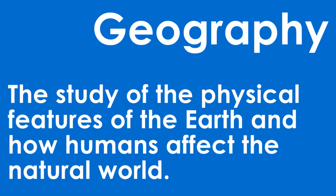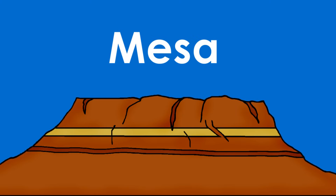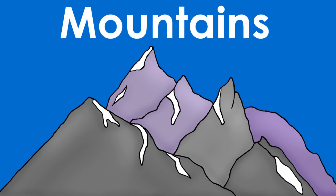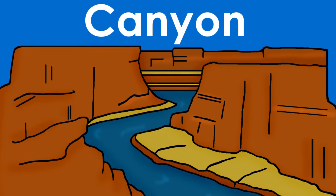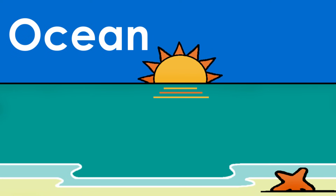Geography is a study of the physical features of the Earth and how they affect the humans who call the planet home. Physical features include landforms like valleys, mesas, mountains, deserts, volcanoes, and canyons, along with waterforms like lakes, rivers, and oceans.